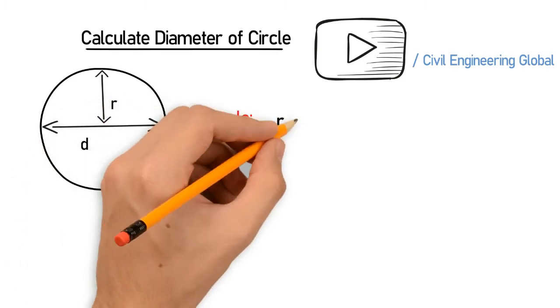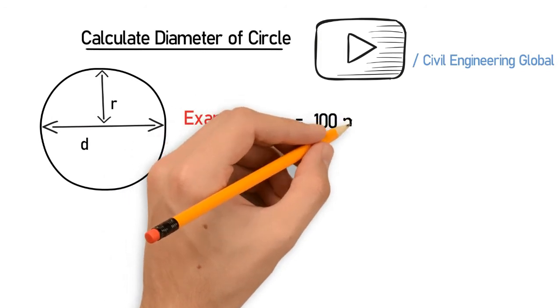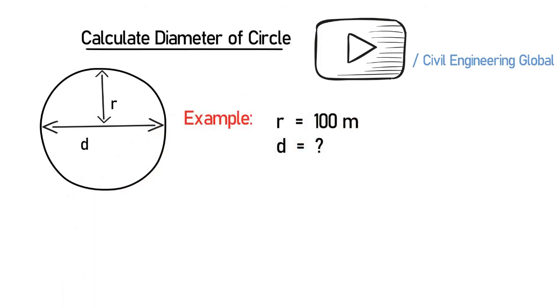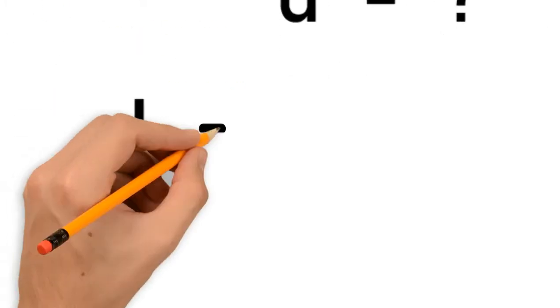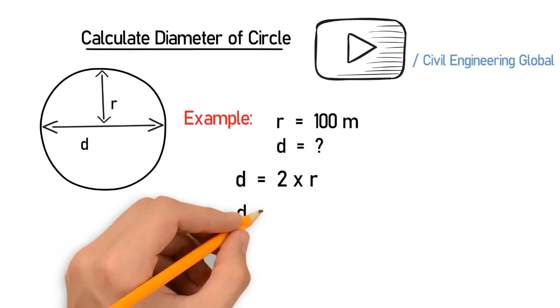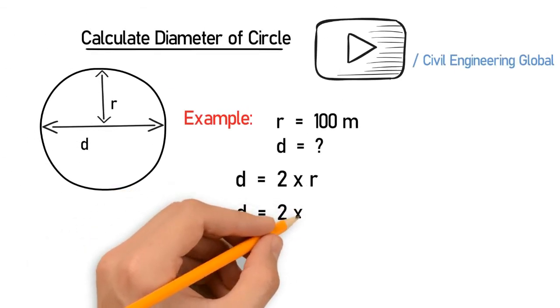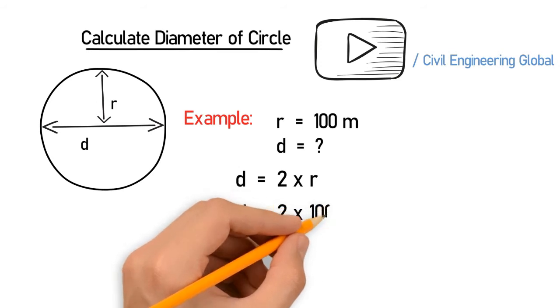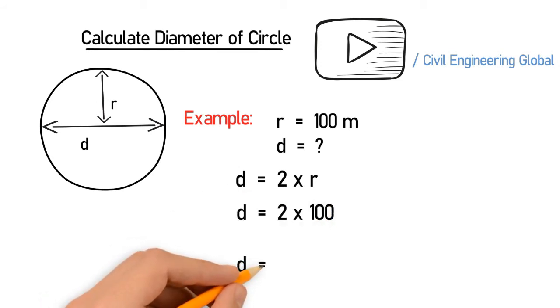So to calculate the diameter, we have the formula: D equals 2 multiplied by R. As we all know, the radius is half the distance of the diameter, so you get D equals 2 multiplied by 100. So D equals 200 meters.